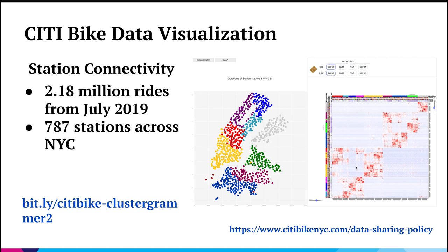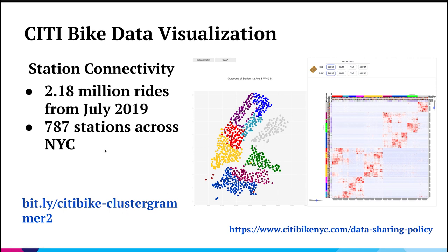Our first example: we decided we wanted to visualize CityBike data from New York City. This data is publicly available under their data sharing program. We took 2.18 million rides from the month of July in 2019, and these rides occurred across 787 stations across the city. We wanted to see if we could, in an unbiased manner, cluster stations based on their connectivity — if you're at one station, what stations are you most likely to go to next — and then perform unbiased clustering and visualize it using ClusterGrammar.